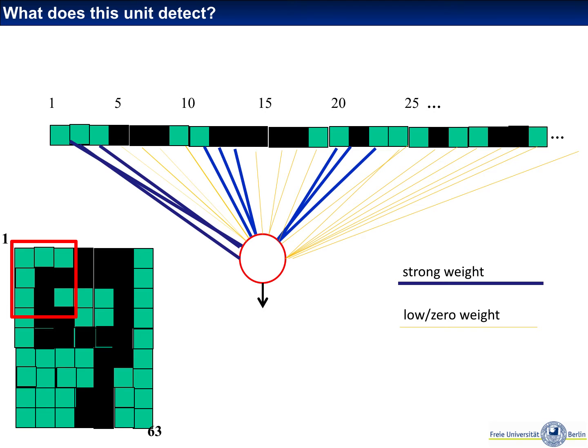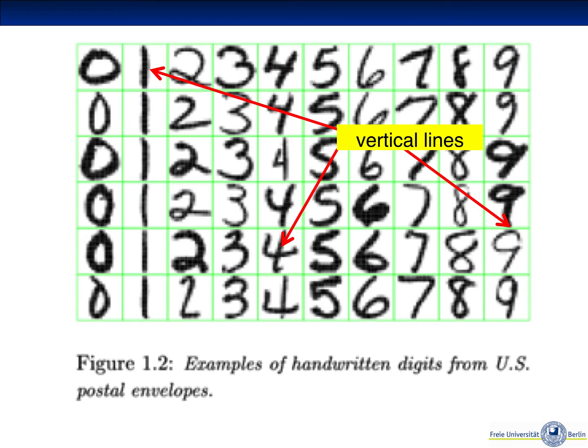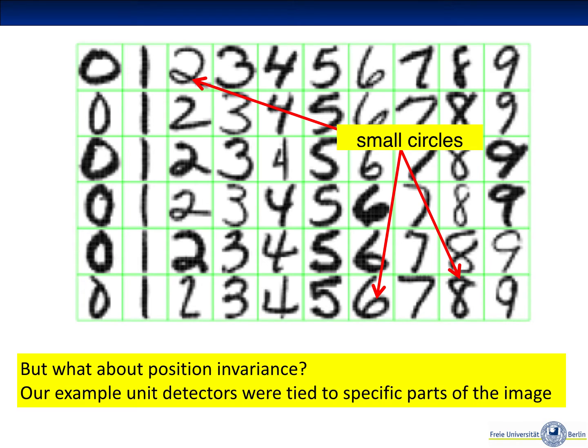In this way we can imagine neurons to be feature detectors of certain patterns in the image, such as there is a block of bright pixels in the top left, or other features such as vertical lines, horizontal lines, small circles, etc.